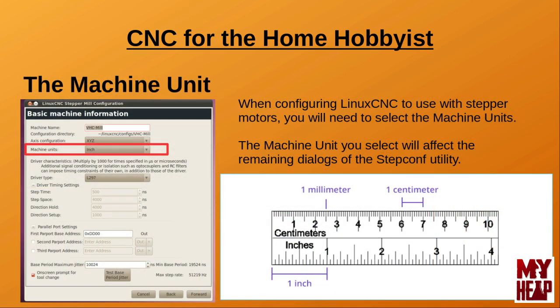Before delving into either the lead screw or the rack and pinion, I want to discuss the machine unit. The machine unit will be the unit of measure in which your machine will be built and calibrated. For most in the United States that would be the inch, while European and other countries would most likely use the millimeter. When configuring LinuxCNC with the step-conf utility for using stepper motors, you will need to select the machine unit, which will affect the remaining step-conf wizard dialogues. The unit you select — either inch or millimeter — will be entirely up to you, but it should be noted that the configuration would be simpler if you selected the unit that corresponds with the lead screw that you're using, if in fact you're using a lead screw.